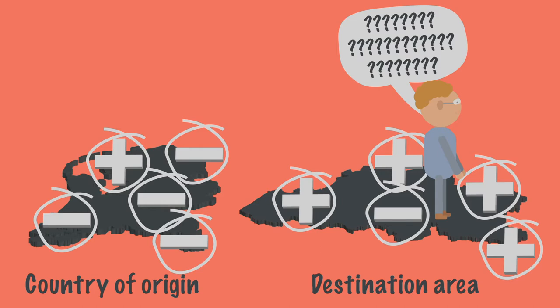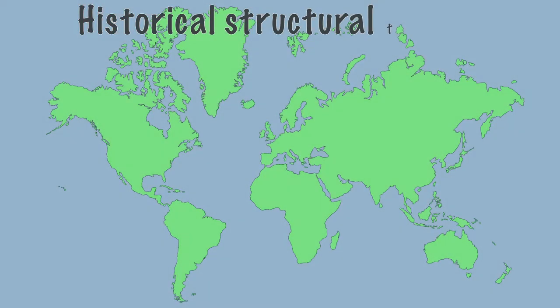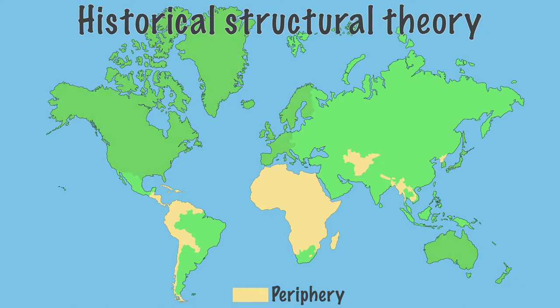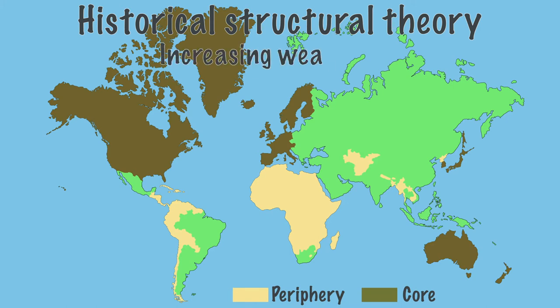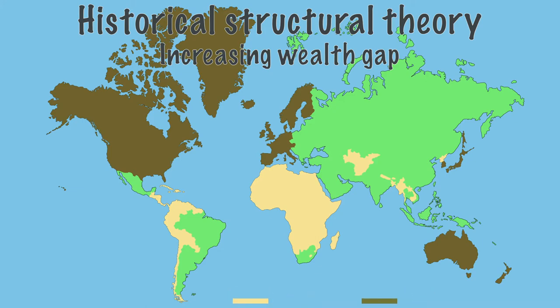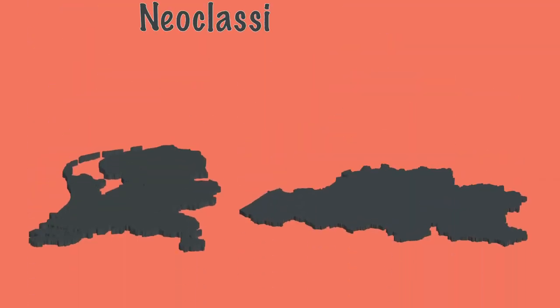This is in line with the historical structural theory, which assumes that migration is mainly the result of the unequal distribution of wealth. In the world system, peripheral countries can provide the cheap labor force needed in core countries. Because the profits remain in the core, according to the historical structural theory, this would further increase the differences in prosperity, and those differences are the most important driver of migration.